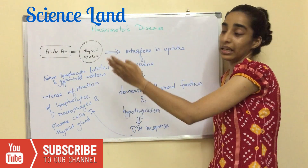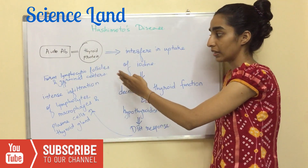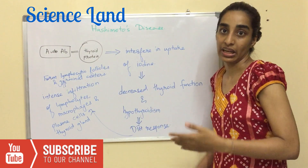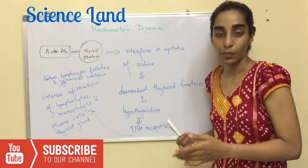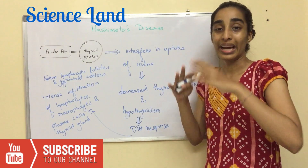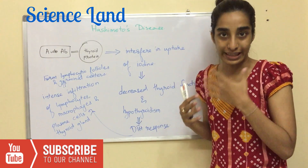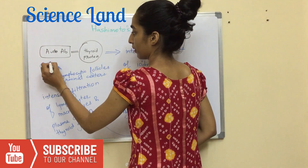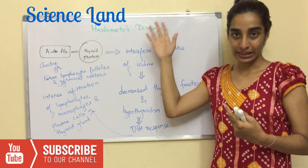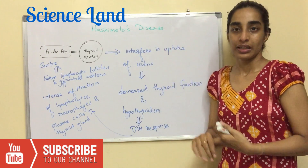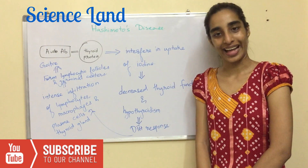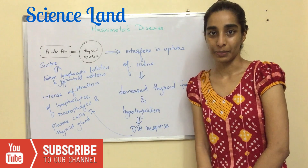These lymphocytic follicles and germinal centers result in inflammation, which causes goiter — the visible enlargement of the thyroid gland. This is the immunology of Hashimoto's disease. That's it for today's video. Thank you so much for watching — do share and subscribe!